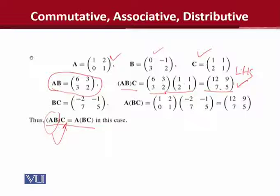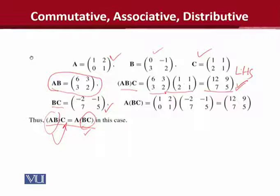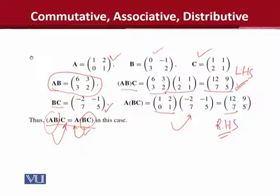Now moving to the right-hand side: first we calculate B times C using the standard procedure following the conformity conditions of multiplication, and then multiply that result by A. When you compare the two sides, you can see that the answers are equal. This means that when it comes to matrix multiplication, the associative law holds.